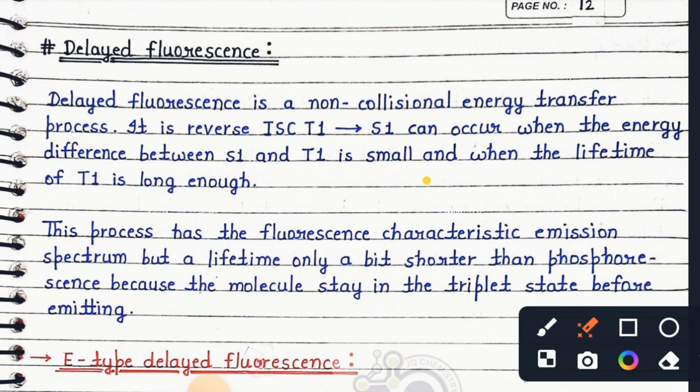This process has the fluorescence characteristic emission spectrum but a lifetime only a bit shorter than phosphorescence because the molecule stays in the triplet state before emitting.